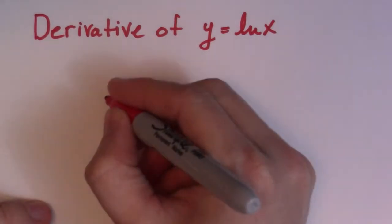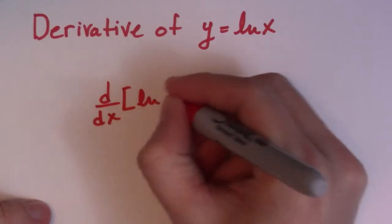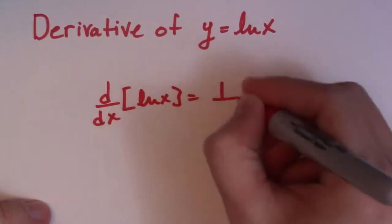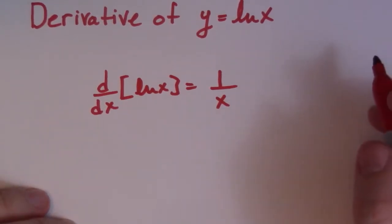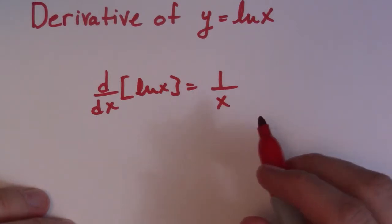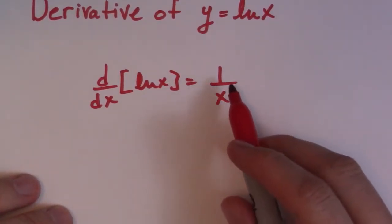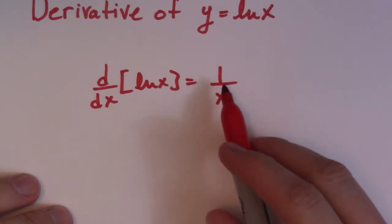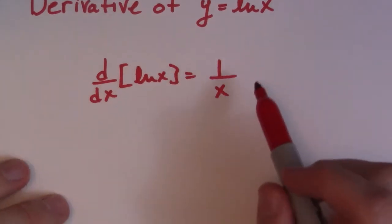So the derivative of ln of x is 1 over x. It's that simple. It's one of those ones you just need to know. And a lot of times you can't get totally obsessed with where this comes from or knowing the proof and things like that. A lot of times you get caught up in the details. This is just, you just need to know it, right? So the derivative of ln of x is 1 over x.